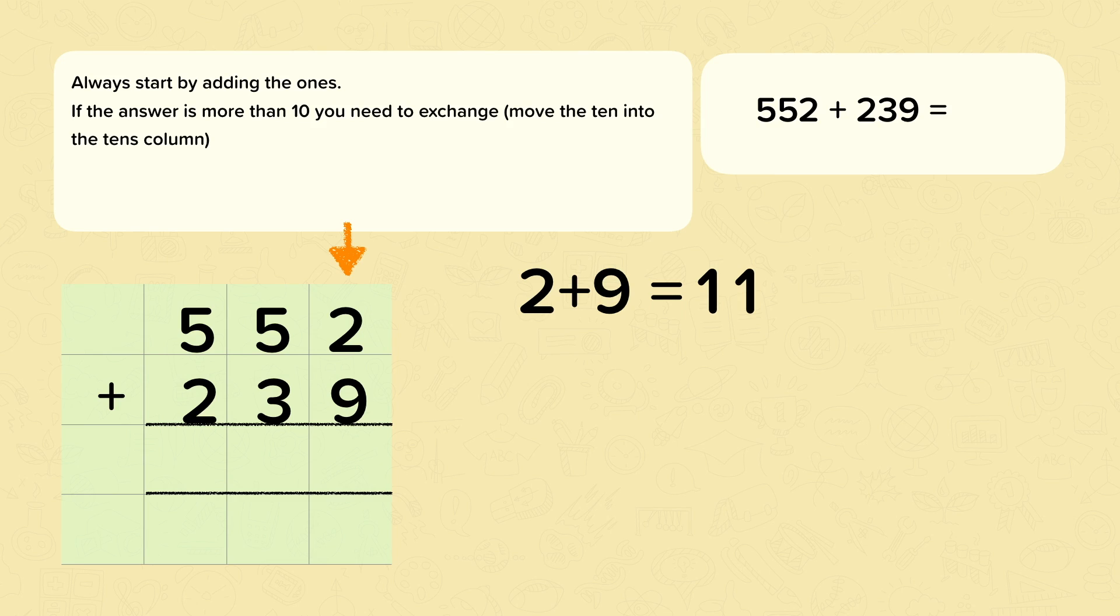So if there's more than ten, you need to exchange. To do this, you move the ten into the tens column, and the one goes into the ones column.